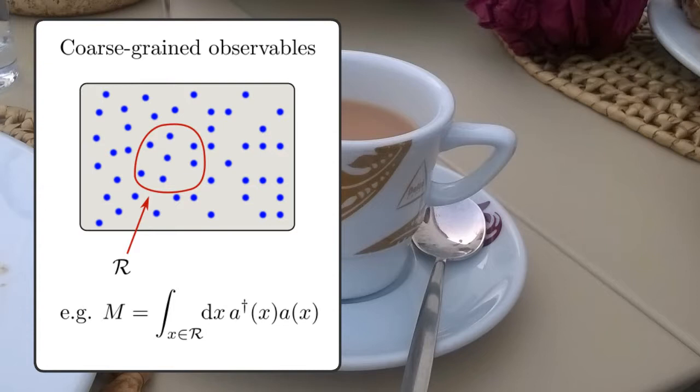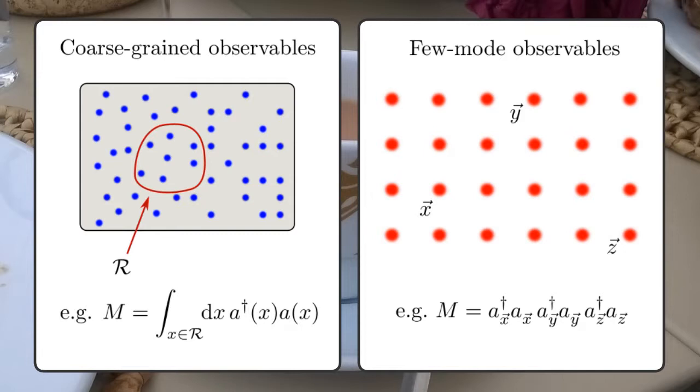In this paper, we look at two classes of measurements. The first are coarse-grain measurements, like particle number or magnetization in a region of space. The second are few mode measurements, like correlation functions or phase correlators.